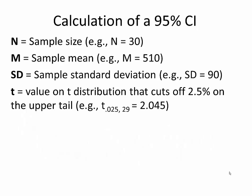The first step is to summarize this information. N represents the sample size — in this example, N is 30. The sample mean is 510, the standard deviation is 90, and the t-value will be used to identify the cutoff points. For a 95% confidence interval, we choose a t-value that cuts off 95% in the middle of the distribution and only 2.5% on each end.